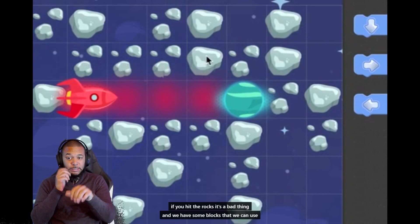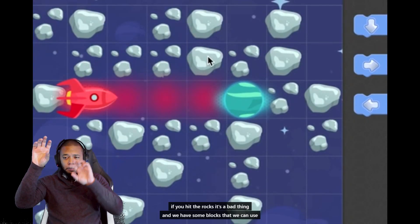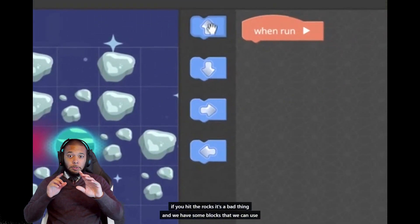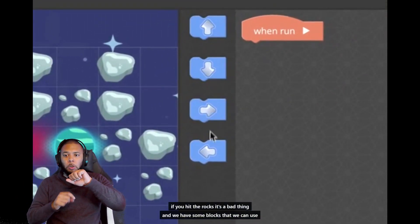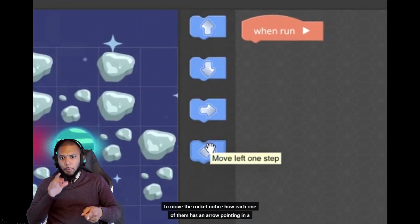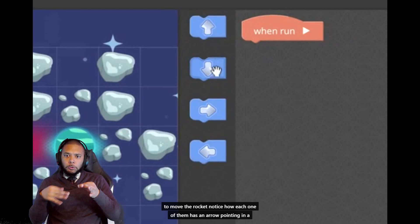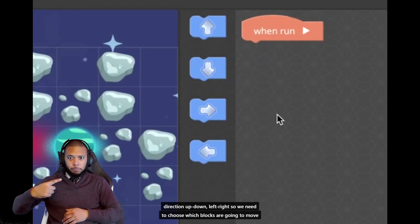If you hit the rocks, it's a bad thing, and we have some blocks that we can use to move the rocket. Notice how each one of them has an arrow pointing in a direction: up, down, left, right.